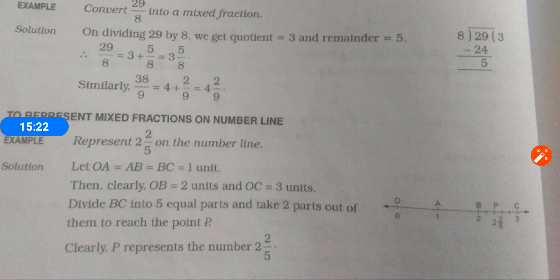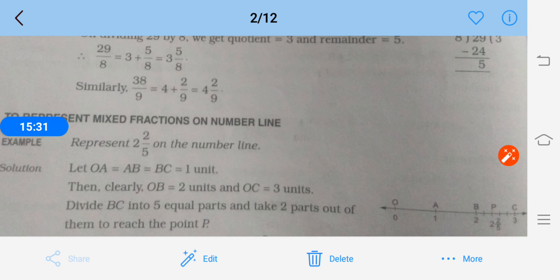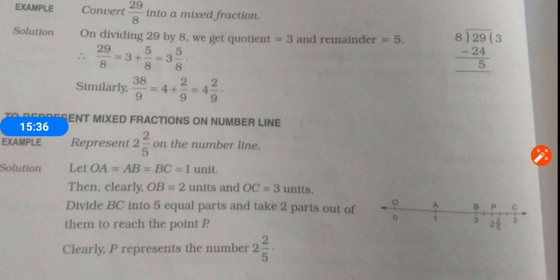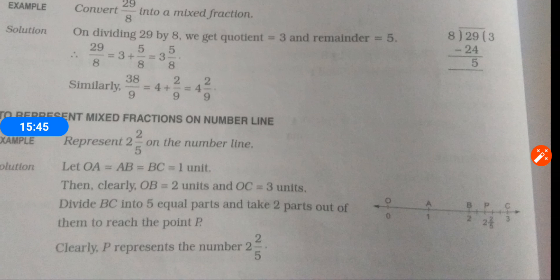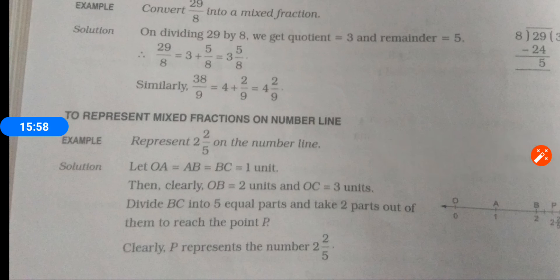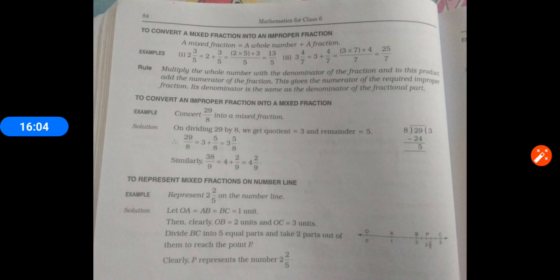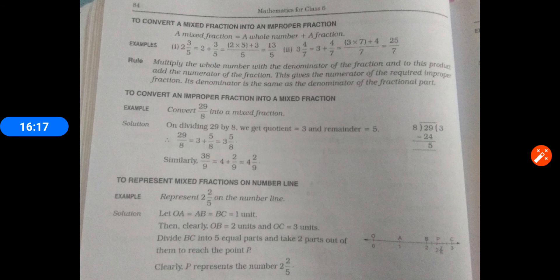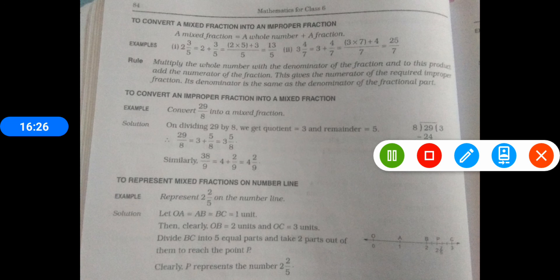To represent a mixed fraction on the number line: let OA = AB = BC = 1 unit. Clearly OB is 2 units and OC is 3 units. Divide BC into five equal parts and take two parts out of them to reach point P. P represents 2 and 2/5. I hope this is clear. Let's stop here and continue with the next topic in the next session. Thank you so much for watching, bye.